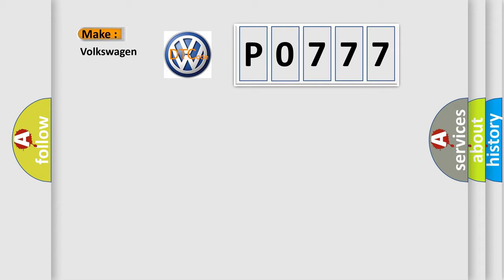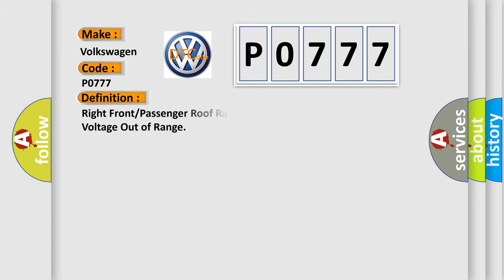So, what does the diagnostic trouble code P0777 interpret specifically for Volkswagen car manufacturers? The basic definition is: Right front or passenger roof rail or head curtain bag deployment loop voltage out of range. And now this is a short description of this DTC code.